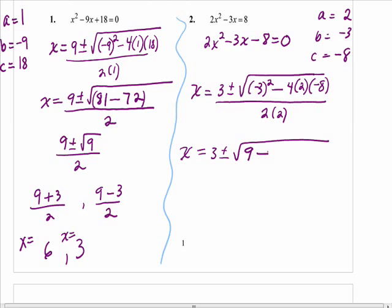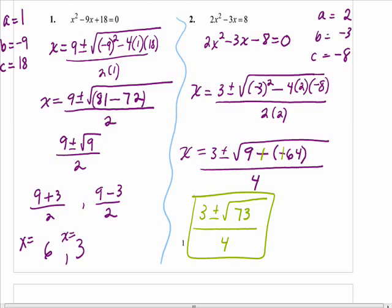3 plus or minus, negative 3 squared is 9. Remember that first term under the radical is always positive. Put down the minus sign. Now multiply: 4 times 2 is 8, 8 times negative 8 is negative 64. If you carefully manage your negatives, we will end up adding. 2 times 2 is 4. We have minus a negative, so that becomes plus. 3 plus or minus, what is 9 plus 64? 73.